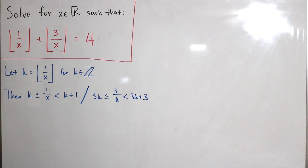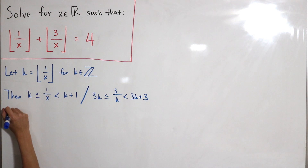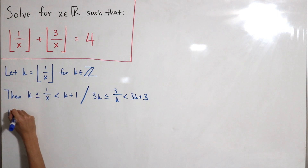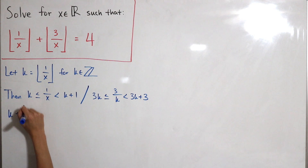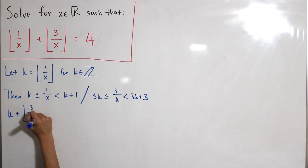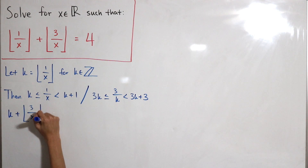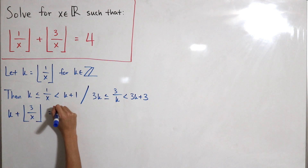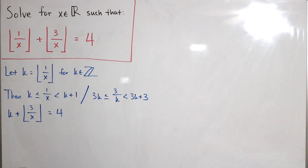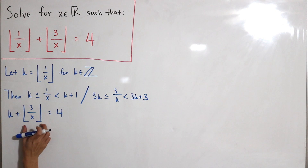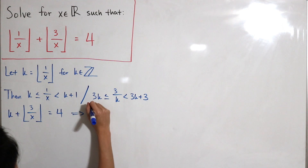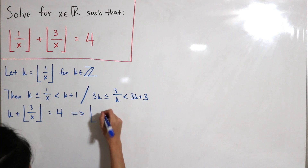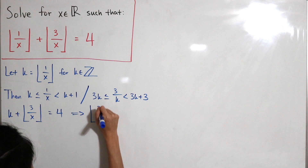Now plugging back into the original equation: k plus the floor of 3 over x equals 4. This means the floor of 3 over x by itself equals 4 minus k.